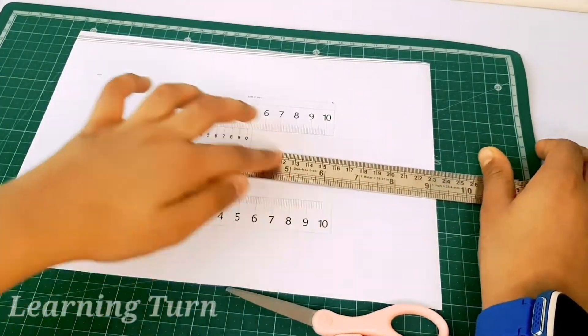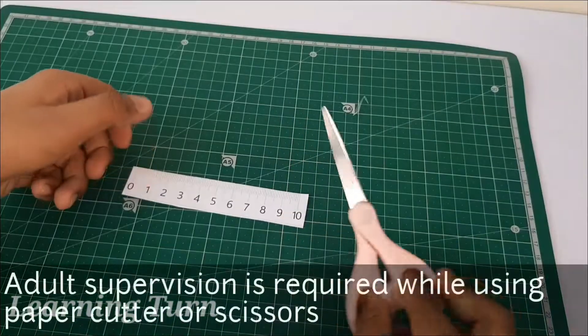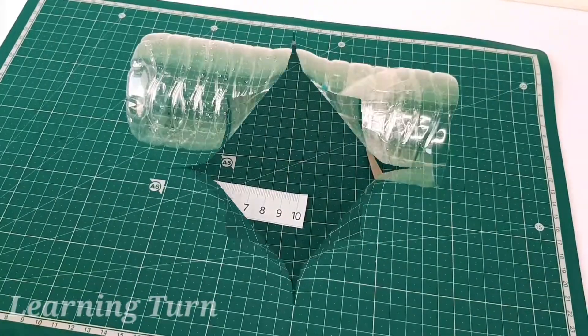Stick a ruler on the side of the bottle. I don't have a 10 centimeter ruler so I'm making measurements on a paper and then sticking it.